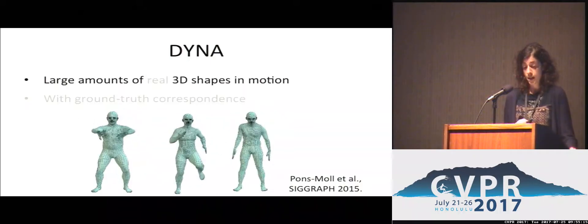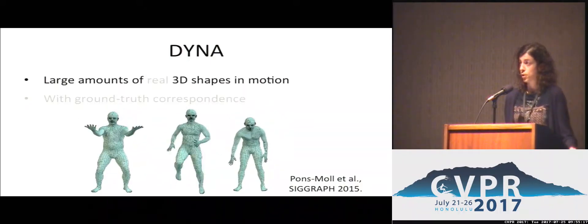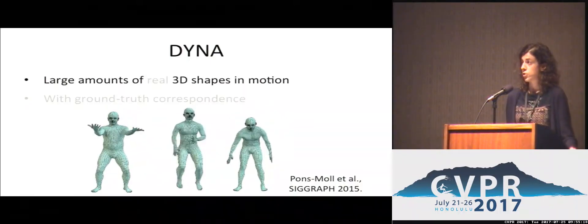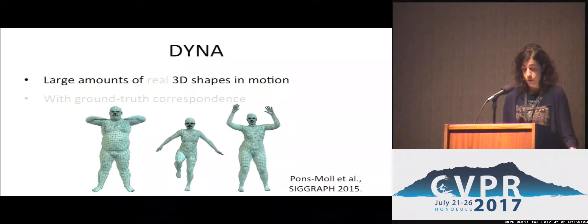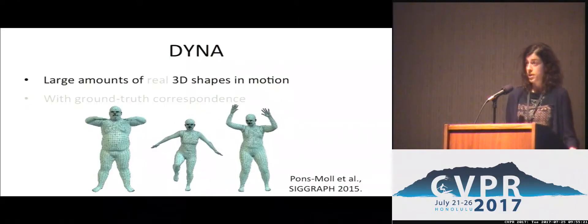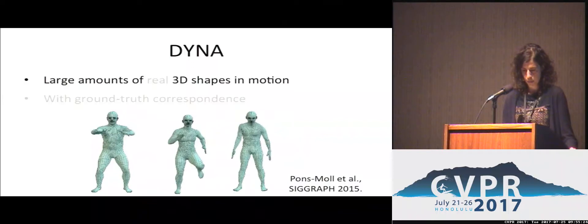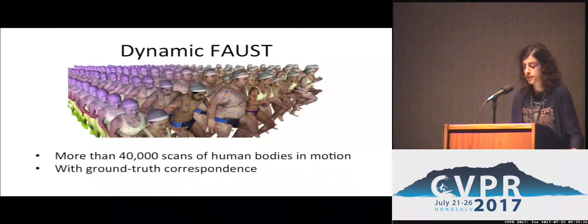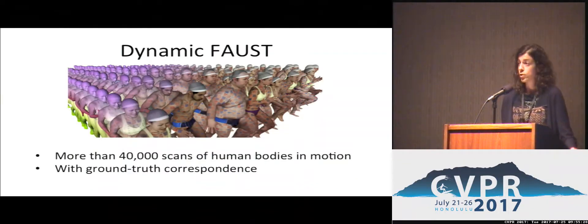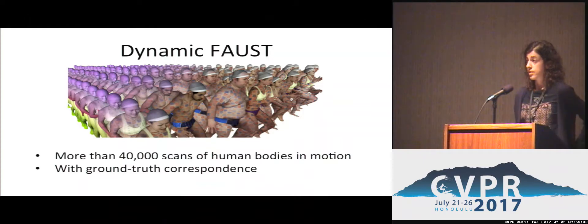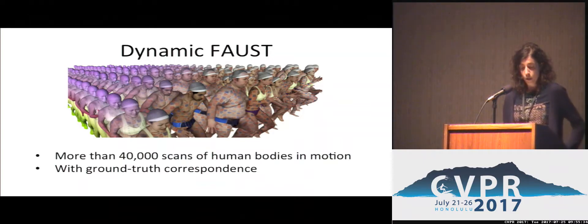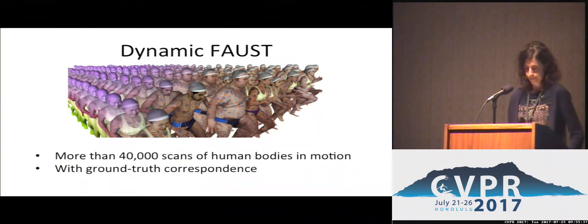Furthermore, Dyna provides the registrations used to train the model, but not the original data. So we tried to combine the positive aspects of FAUST and Dyna, and propose Dynamic FAUST, which is a dataset collecting more than 40,000 scans of human bodies in motion — the same sequences and subjects as in Dyna — with automatically computed ground truth correspondence.